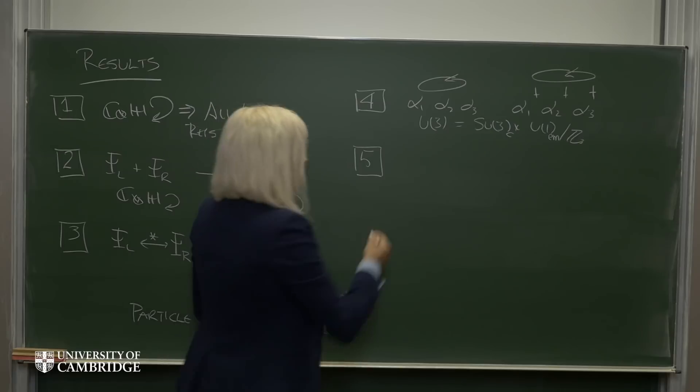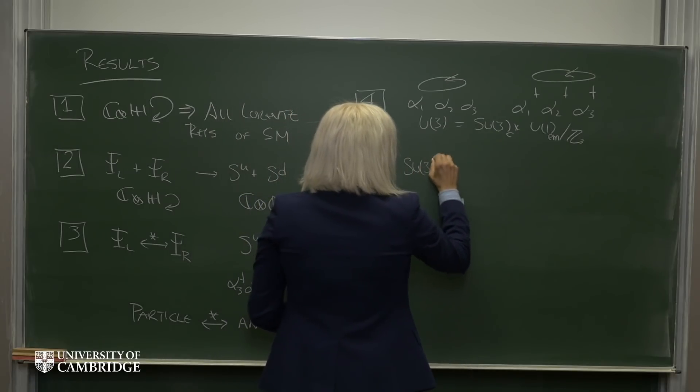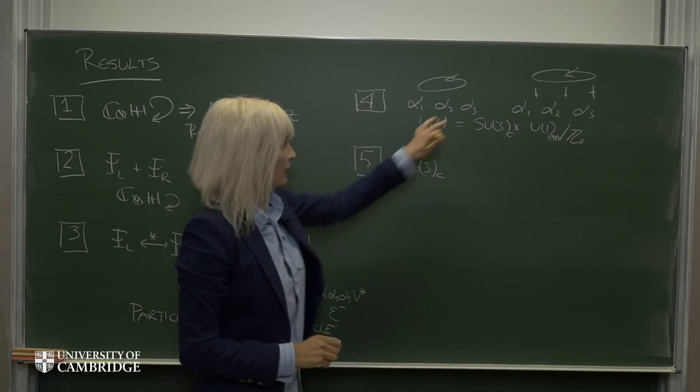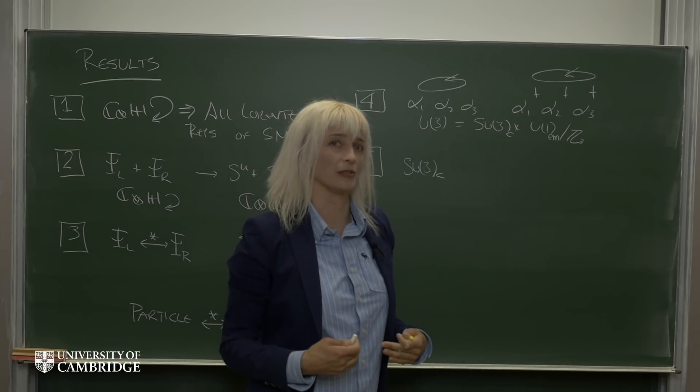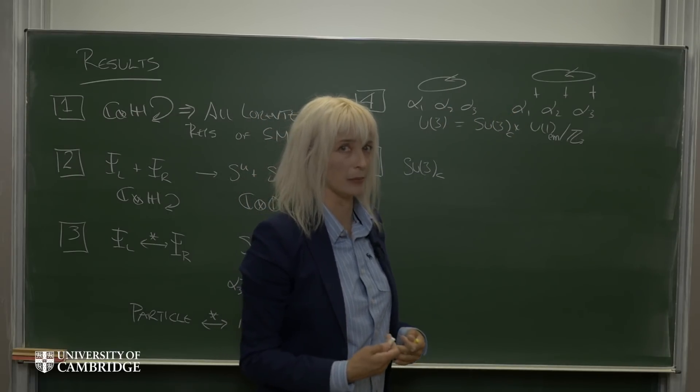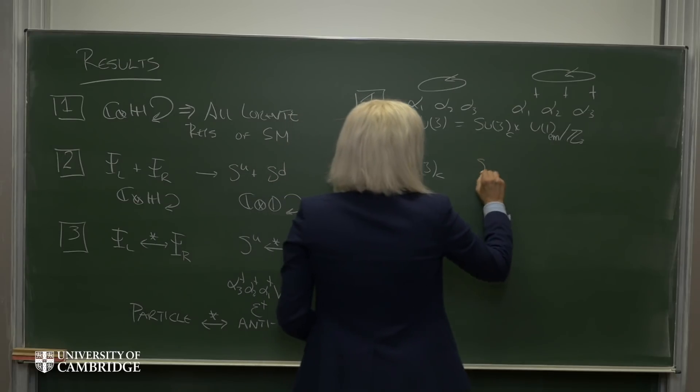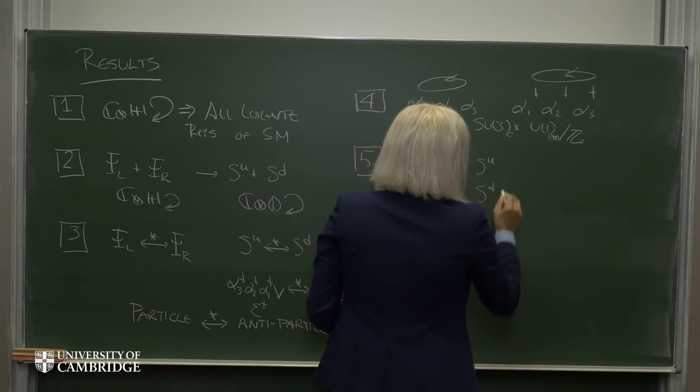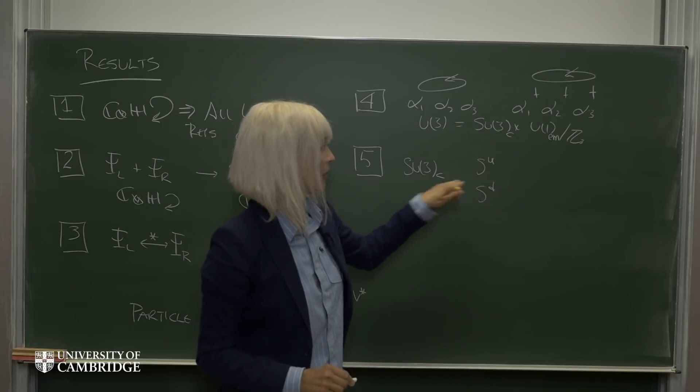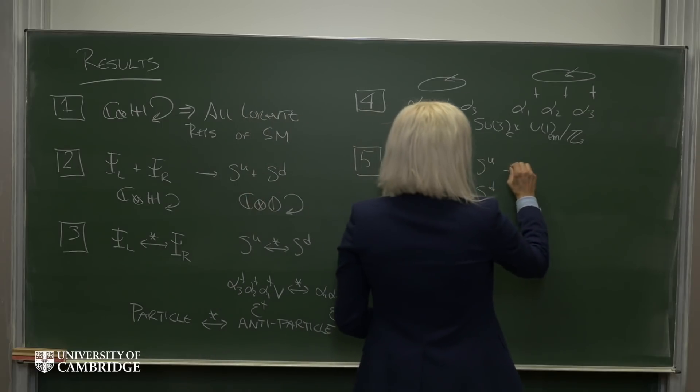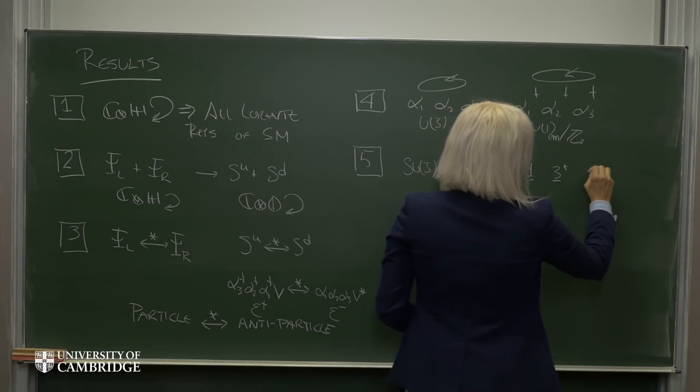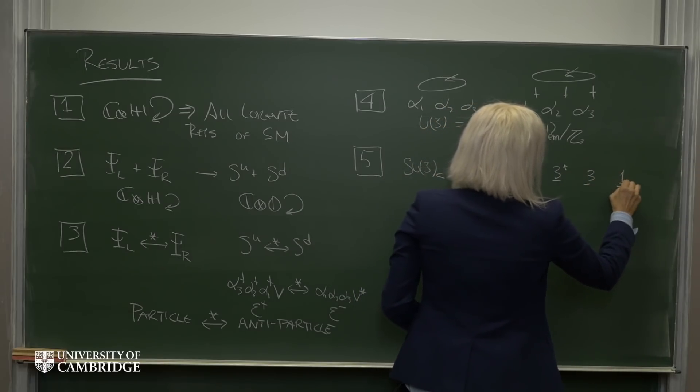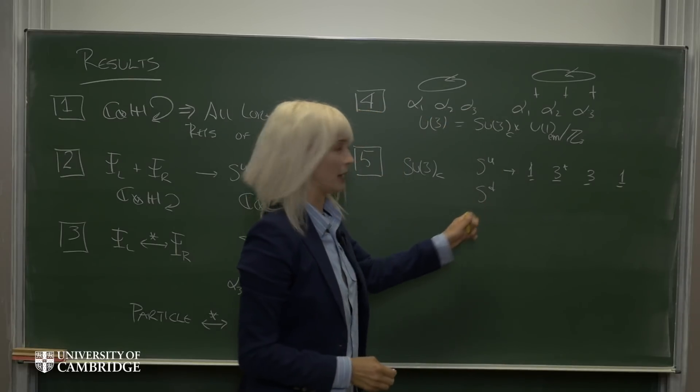Next in the case of SU3, we found that the transformations on these ladder operators induce transformations on SU and SD, our two minimal left ideals. And we found that SU, under SU3, broke down as a singlet, an antitriplet, a triplet, and a singlet, and SD broke down like this.